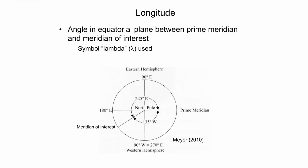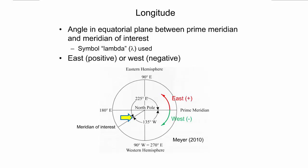Longitude, denoted by the small Greek letter lambda, is an angle in the equatorial plane measured from the prime meridian to some other meridian of interest. The angle of longitude can be reckoned either east or west. A clockwise angle gives longitude west, and a counterclockwise angle gives longitude east. The figure shows this principle as seen from above the North Pole. For example, the angular distance of the position indicated by the yellow arrow can either be described as 135 degrees west, or 225 degrees east. If the east or west designations are not explicitly given for a longitude, a positive arithmetic sign indicates longitude east, and a negative arithmetic sign indicates longitude west. Therefore, the longitude of the point drawn at the yellow arrow can also be written as 225 degrees or negative 135 degrees.